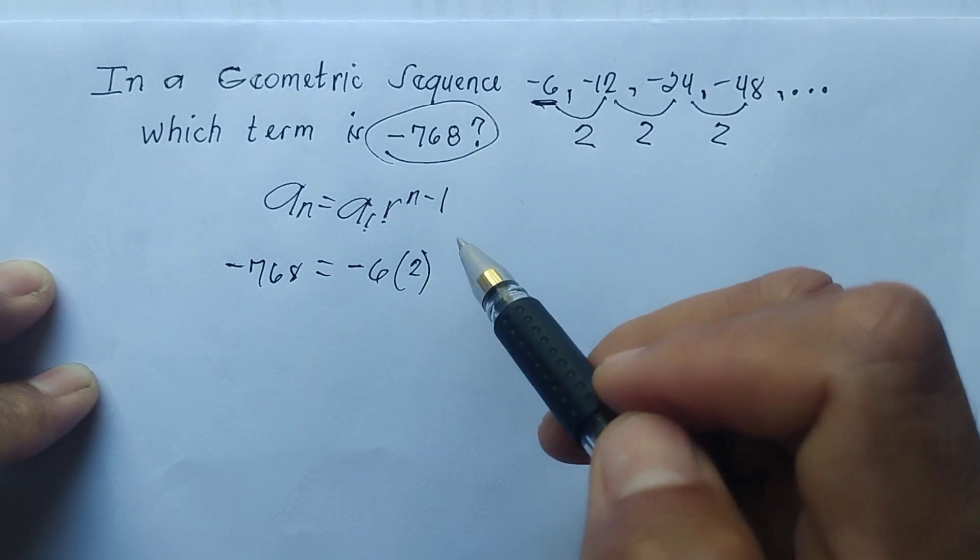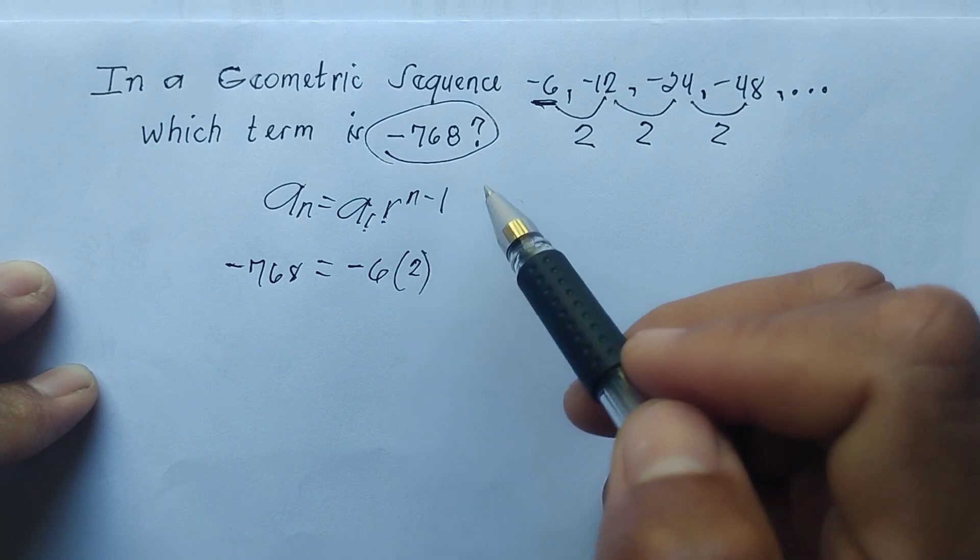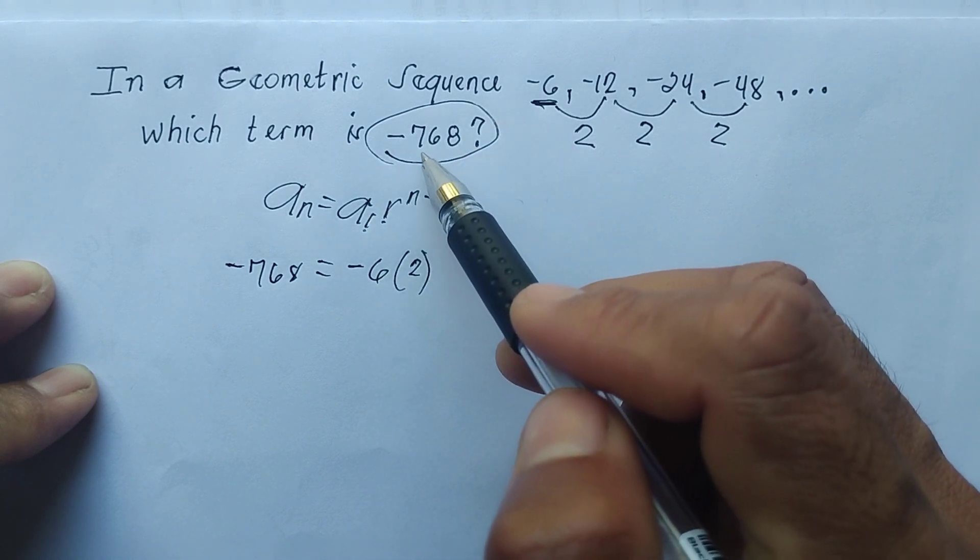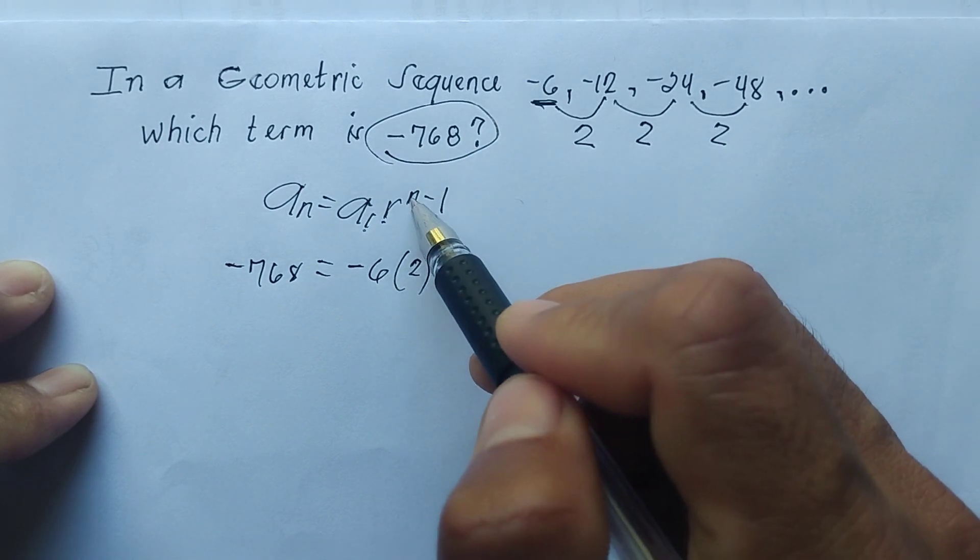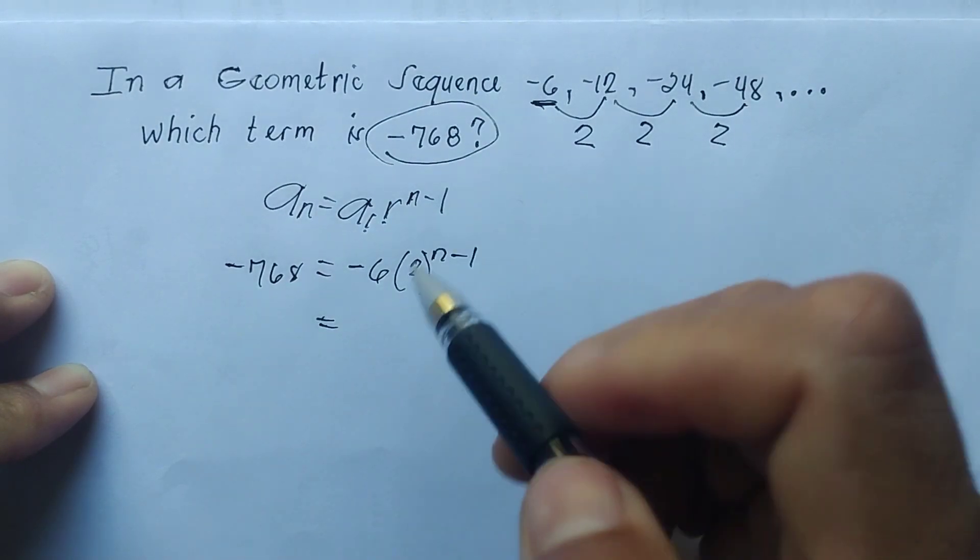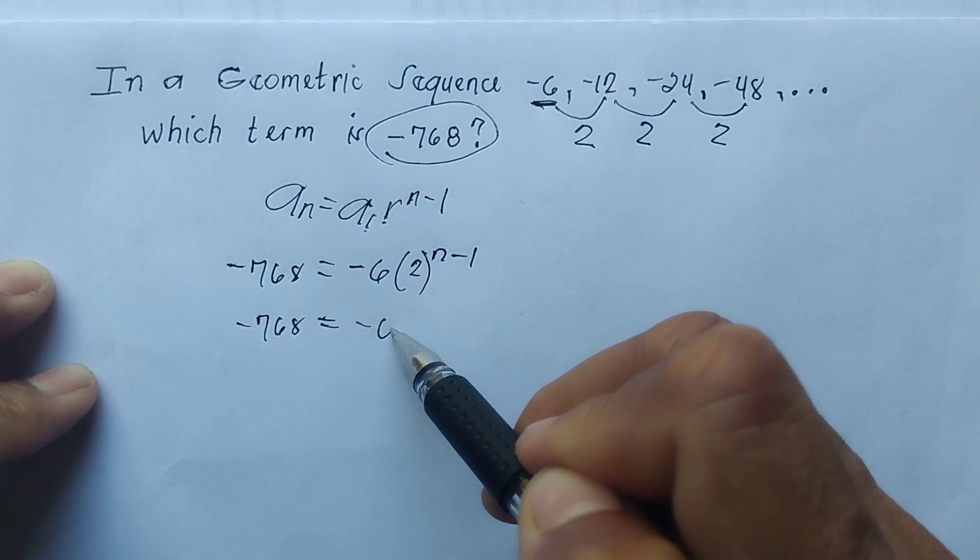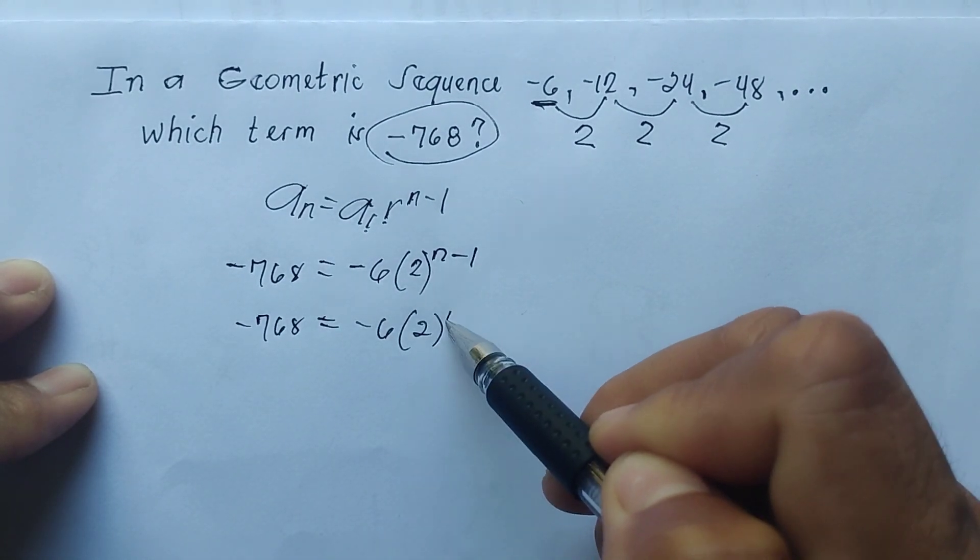Our problem here is to look how many terms are there in this sequence to get the value of -768. So our n is still unknown. We have -768 equals -6 times 2 to the power of n minus 1.